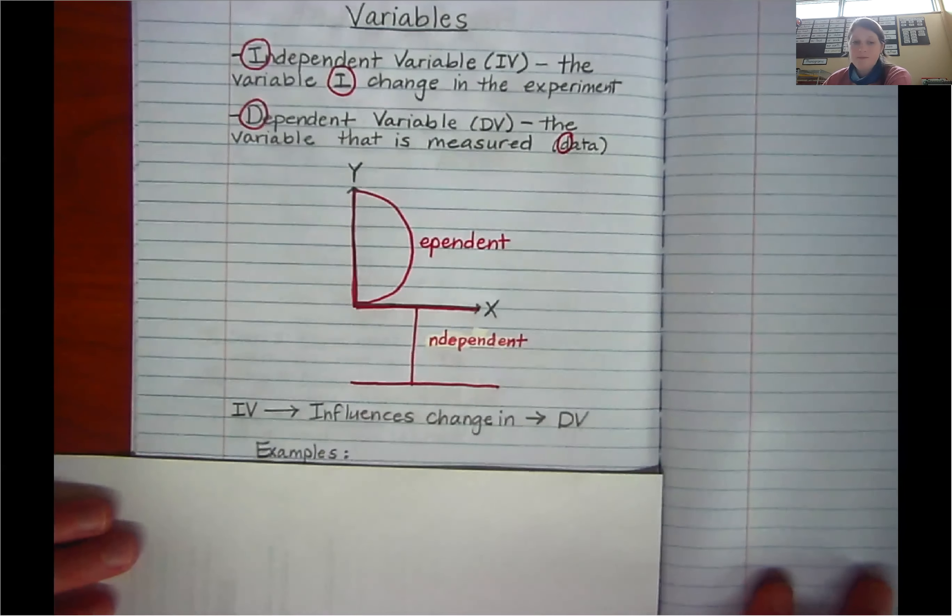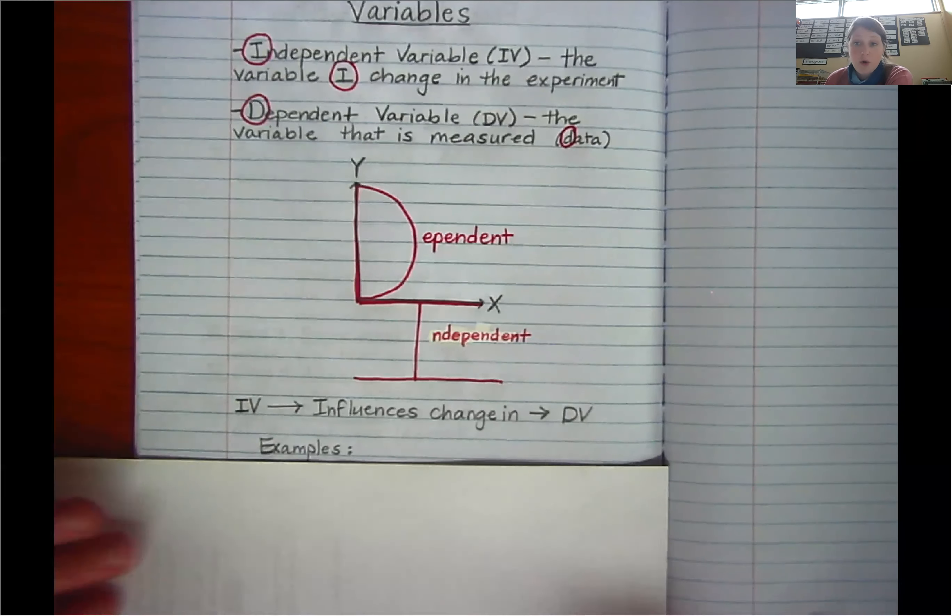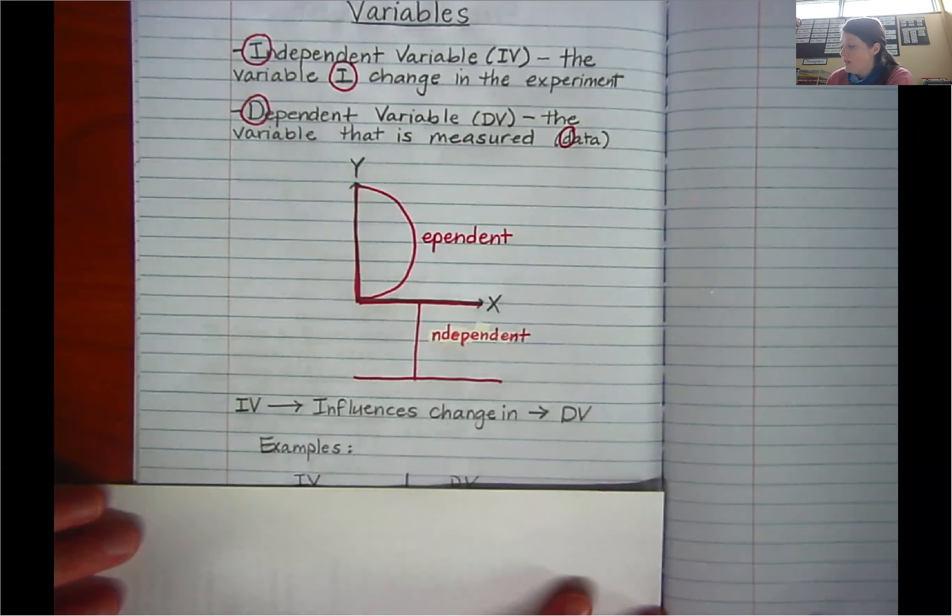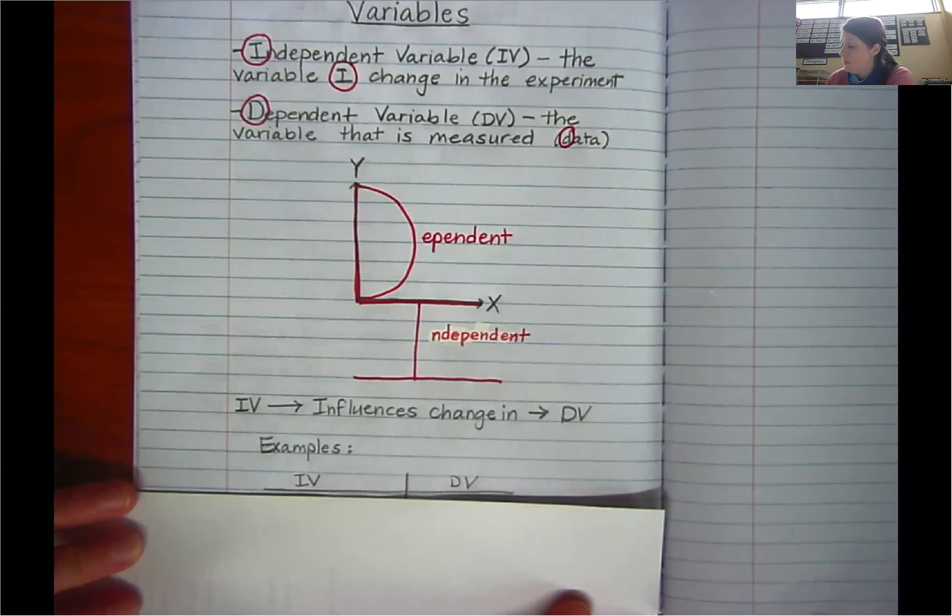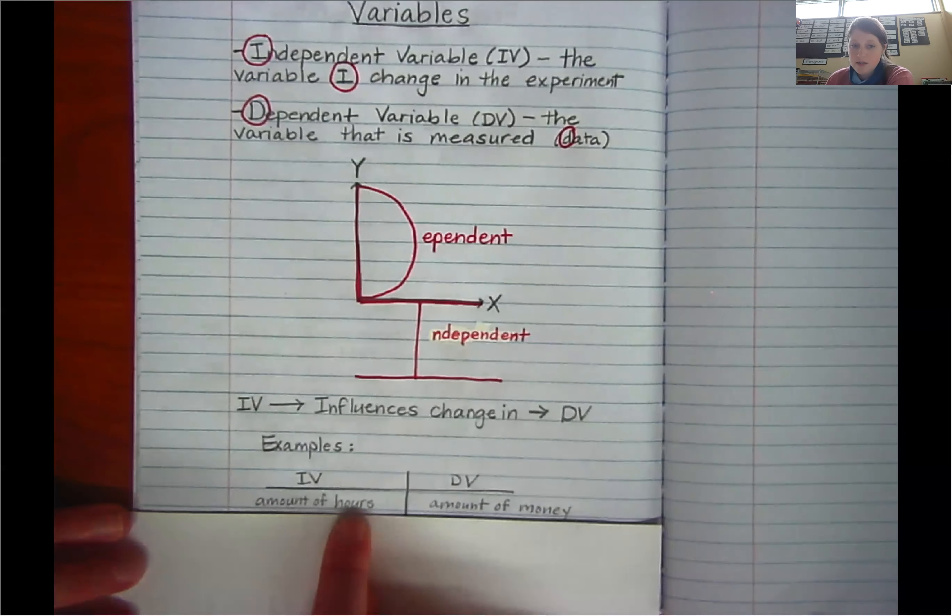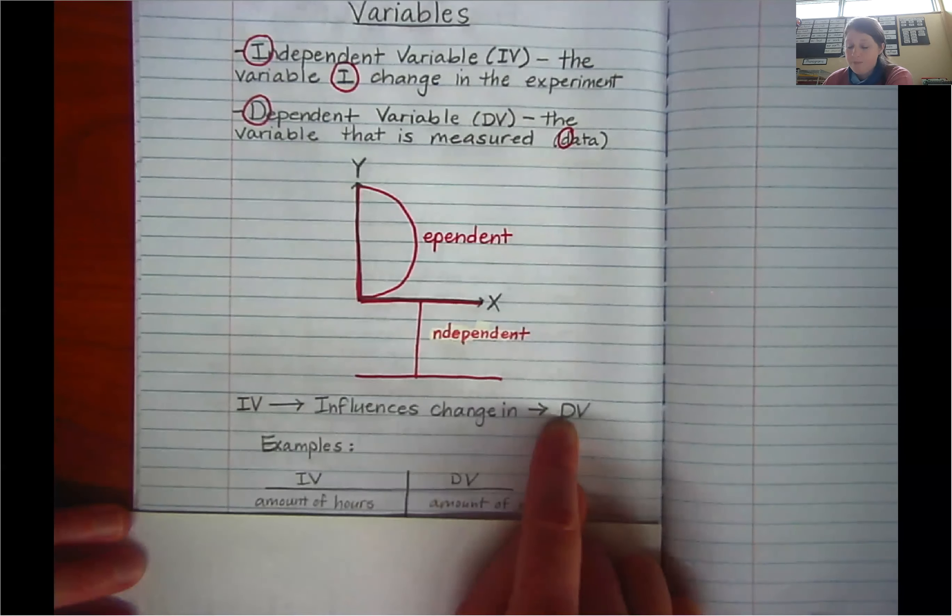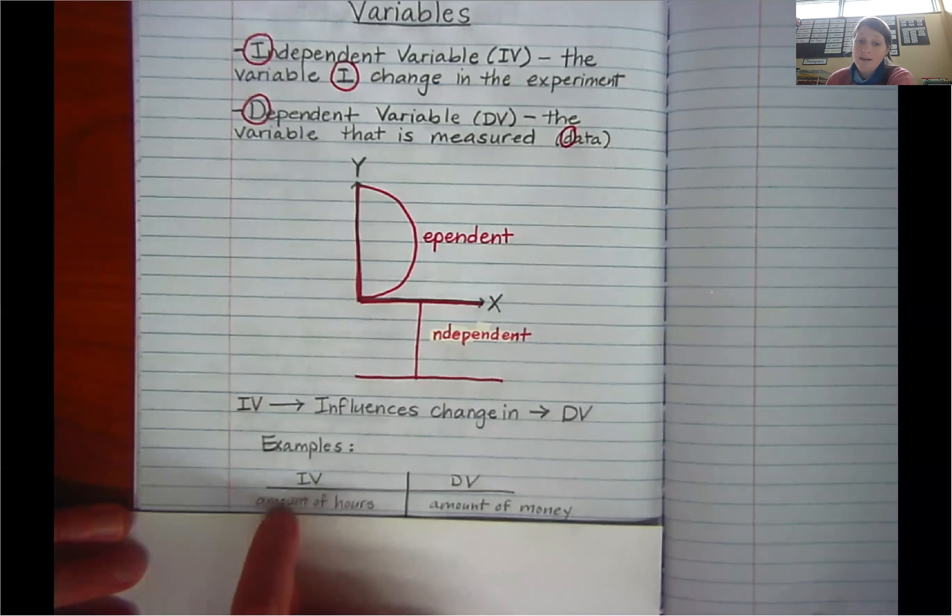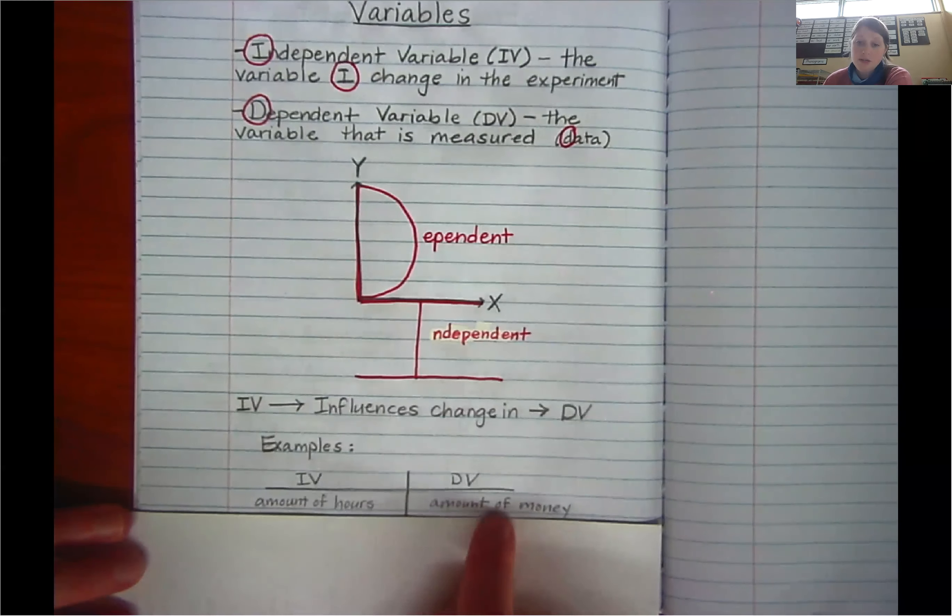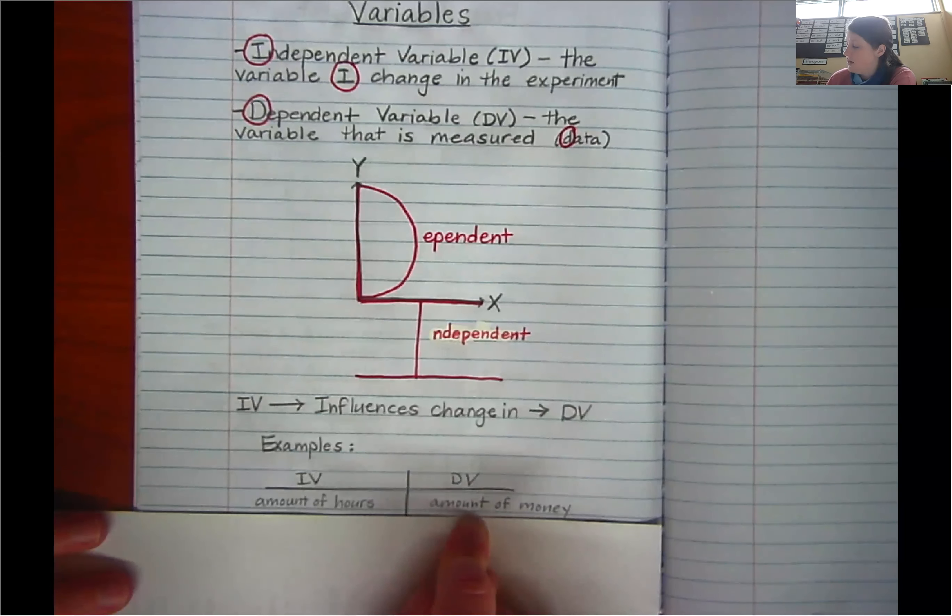So I've got some examples here that I want you to list out to give yourself a few to think about. So I've got my independent variable. I'm making a little t-chart here: IV and DV, independent and dependent variable. So the first one, amount of hours, independent variable, influences change in amount of money. In other words, how much time I work influences change in how much money I make on my paycheck. It doesn't really work with a salary, but if you were working at like a restaurant or something, that would probably be the case. If you were working for many companies, they do hourly wages.